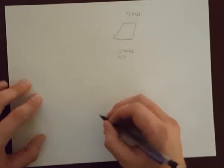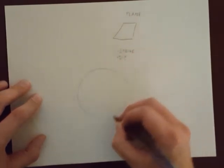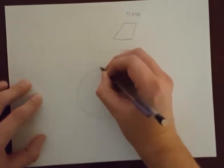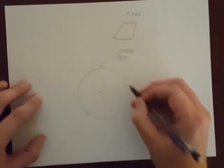I know that strike is a horizontal line, so that means that on my stereonet, strike is going to plot somewhere on the primitive circle.